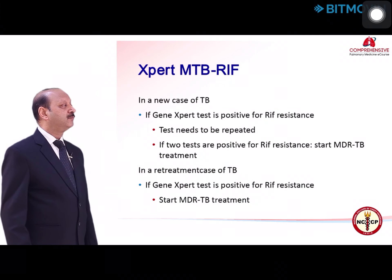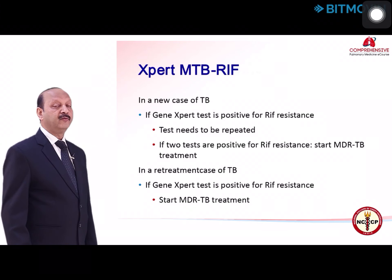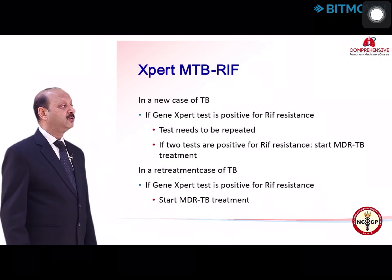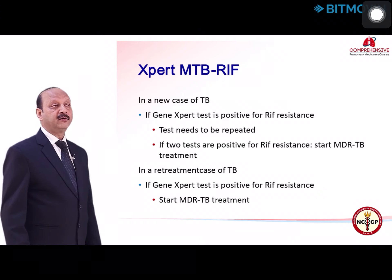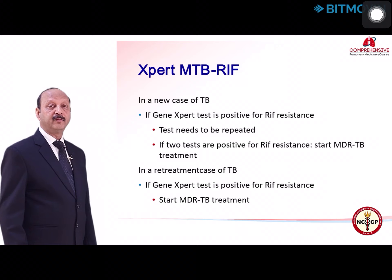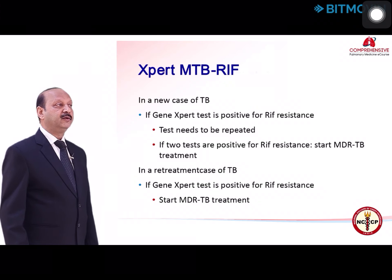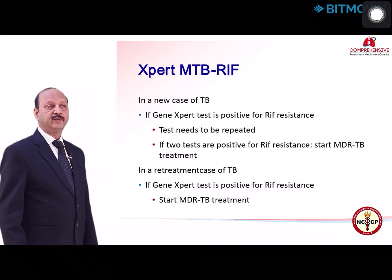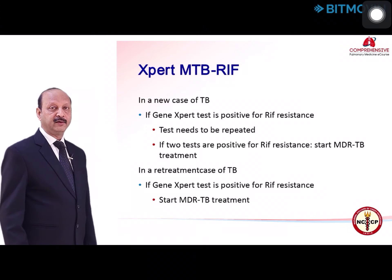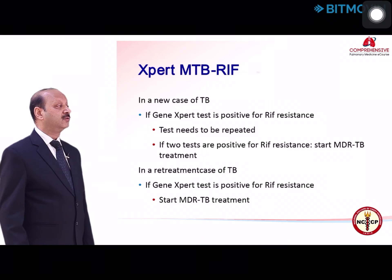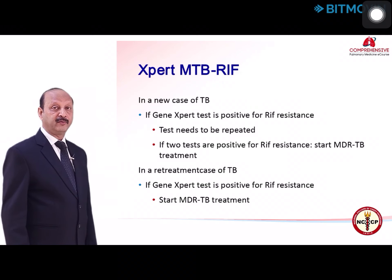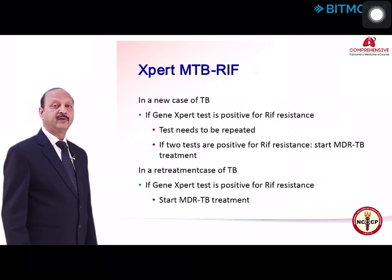In a new case of TB, if GeneXpert is positive for RIF resistance, we need to repeat the test. If two tests are positive for RIF resistance, we can start MDR-TB treatment. Unfortunately in practice, many doctors are starting treatment based on a single GeneXpert report, which can result in falsely starting MDR-TB treatment. For re-treatment tuberculosis cases, even if one test is positive for RIF resistance, one can start MDR-TB treatment.